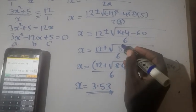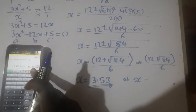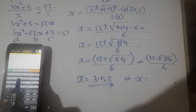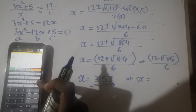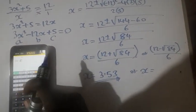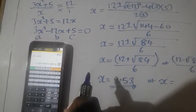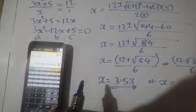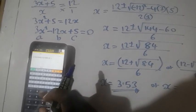Or x equal to open brackets 12 minus square root of 84, then divide by, I mean equal to, then you divide by 6.